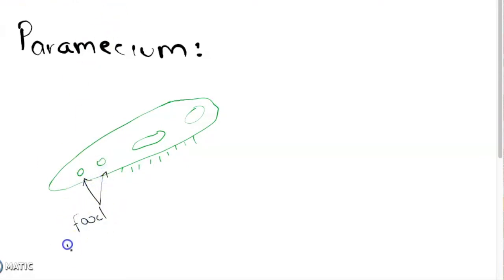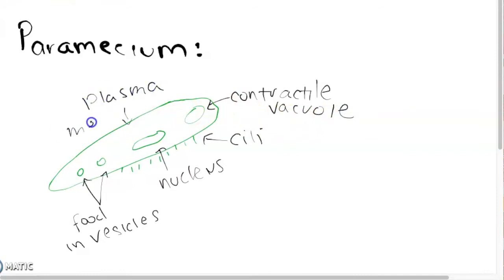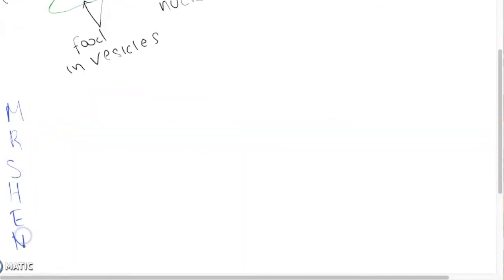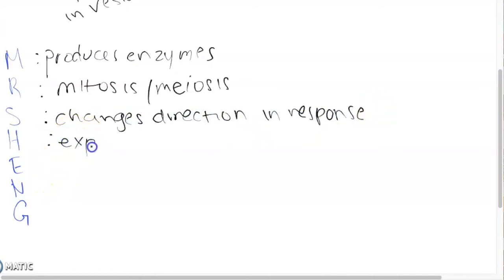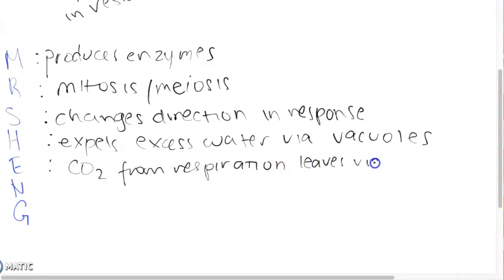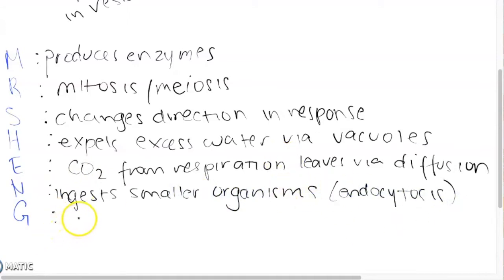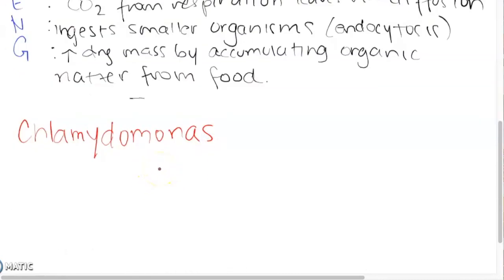So the first we're going to look at is paramecium, this unicellular organism that lives in ponds. So we would draw paramecium as such where there's food in the vesicles which we will see will enter through endocytosis. We have the nucleus where the DNA is held. If we were to highlight all the functions of the paramecium we would start with metabolism. The paramecium basically produces enzymes to catalyze different reactions and to turn nutrition into energy. It reproduces either through mitosis or meiosis. In terms of sensitivity or response it moves directions when touched. As for homeostasis, the paramecium has a contractile vacuole which it actually uses to expel excess water. It excretes its waste which is CO2 from respiration through diffusion as it leaves the cell. It gains nutrition from ingesting smaller organisms through endocytosis and this was shown in the food and the vesicles within the paramecium and it grows through accumulating dry mass from the ingestion of smaller organisms.